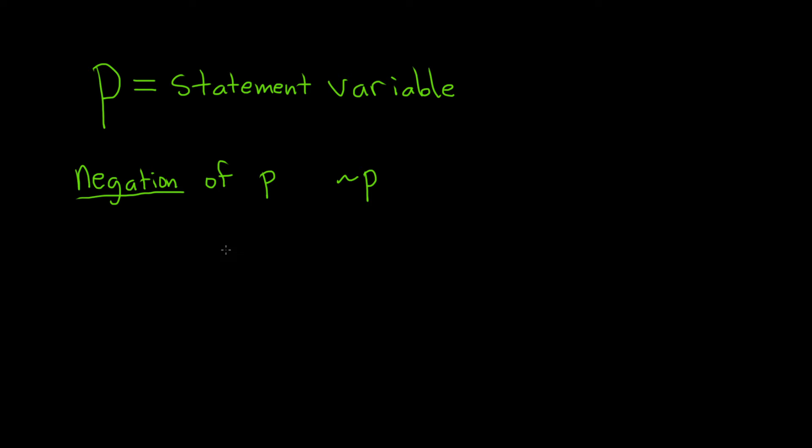So let's make a truth table for this statement. So we're going to list all of the possible truth values of P, and then here we'll have all of the possible truth values of not P. So P can either be true or it can be false. Those are the two options.